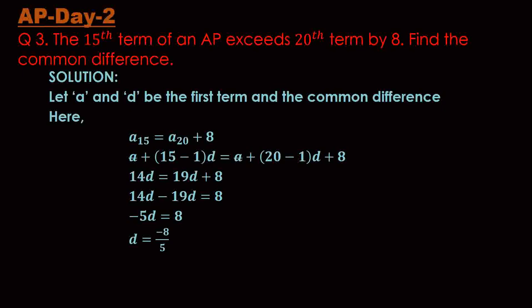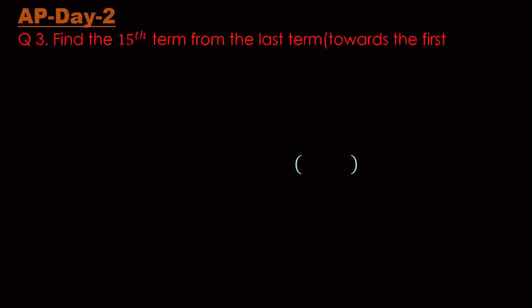Let's move on to question number four. This should be question number four. Find the 15th term from the last term towards the first term of the AP: 3, 7, 11, ..., 123. Here's the thing about this question: we are to find the 15th term from the last term.